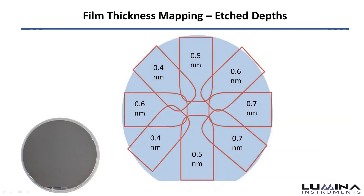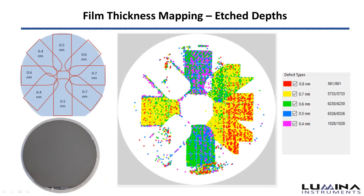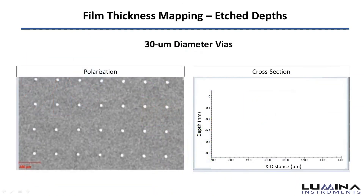An interesting application is for etched vias. The sample provided has eight different regions with varying etched depths. Unlike interferometers, which can only measure the depth of one via at a time, the AT1 system can quickly separate and classify these vias based on their depth. A zoomed-in image of the polarization channel showcases each of the individual vias, and a cross-section across two of them measures their depths to be approximately 0.5 nanometers deep.